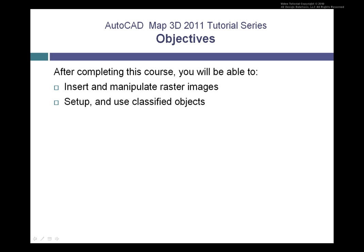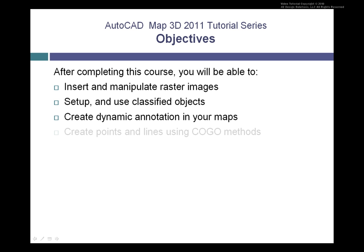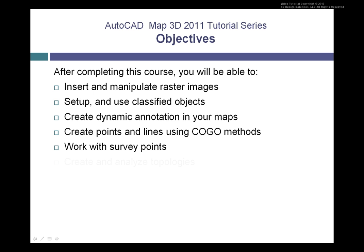You'll learn to insert and manipulate raster images used for background information on your maps, set up and use classified objects, and create dynamic annotations within your maps. You'll create points and lines using coordinate geometry methods, learn to work with survey points, and create and analyze topologies, which provide very powerful analysis tools within AutoCAD Map.